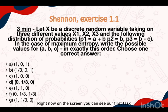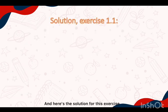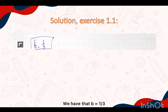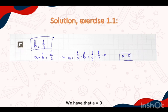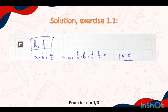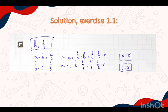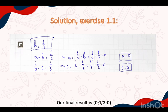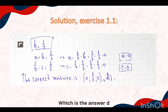Right now on the screen you can see our first task. Here is the solution for this exercise. We have that b equals 1 over 3, then from the equation a plus b equals 1 over 3 we have that a equals 0. Then from b minus c equals 1 over 3 we have that c also equals 0. So in the end our final result is 0, 1 over 3, 0, which is answer d.